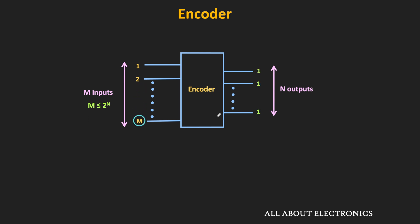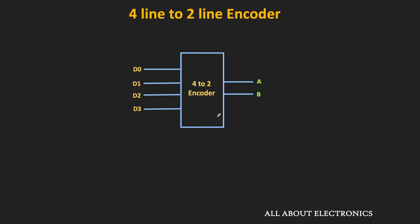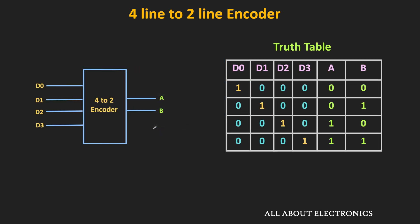Let us take the case of the 4-line to 2-line encoder and understand its working. This encoder has 4 inputs and 2 outputs, meaning n equals 2, and the total number of inputs equals 2 to the power n, which is 4. Here is the truth table: when the D0 input is high, the output of the encoder is equal to 0,0.